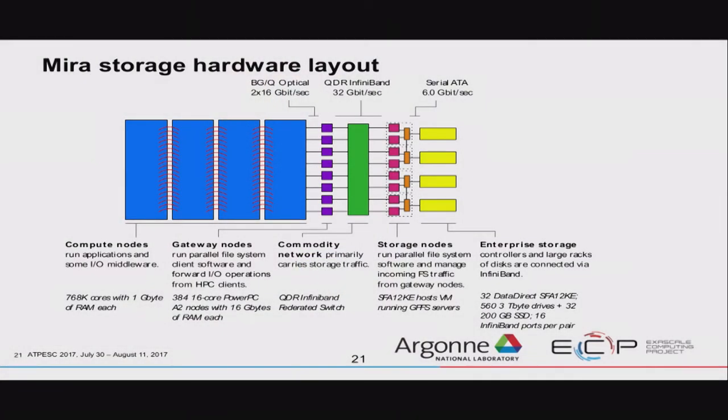Even with 700,000 cores on Mira, they can't all talk to the storage directly — that's intractable. So they relay their I/O operations to a few hundred special I/O nodes on the system that are actually connected to the storage. That's part of your routing: you go from your application to an I/O node, through the InfiniBand switch complex, to a server, through storage appliances, and then you hit one of those 10,000 drives. These are the compute nodes, these are the I/O nodes, the commodity network, the file servers, the storage controllers, and the hard drives.